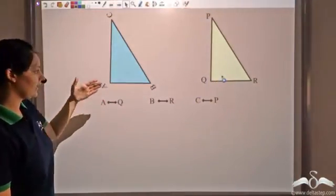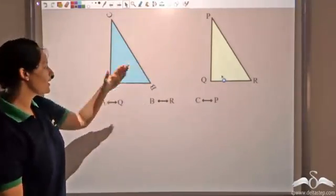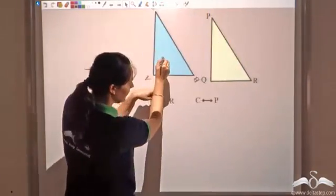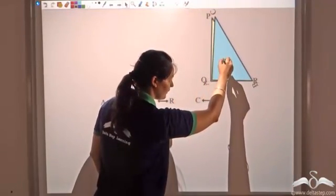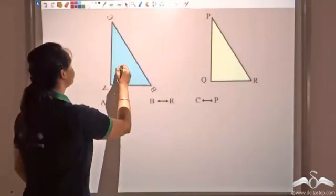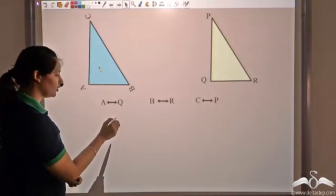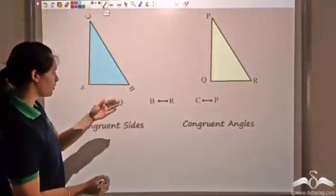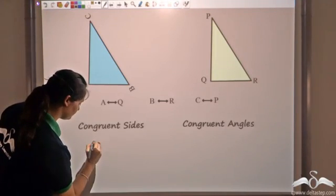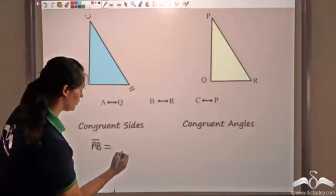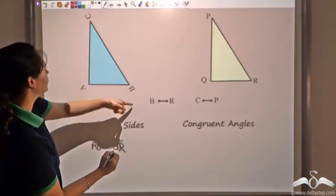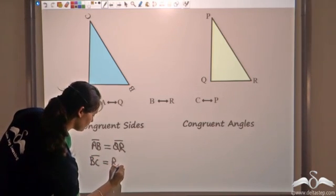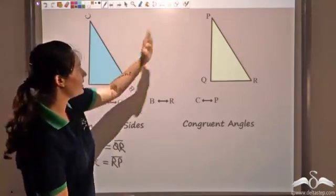B corresponds to R and C corresponds to P. So A corresponds to Q, B to R, and C to P. With this, side AB is equal to side QR — when they perfectly overlap, you can see that AB equals QR. The other sides also perfectly overlap and hence are congruent. So we have congruent sides and congruent angles. AB is equal to QR, BC is equal to RP, and the third side CA is equal to PQ.